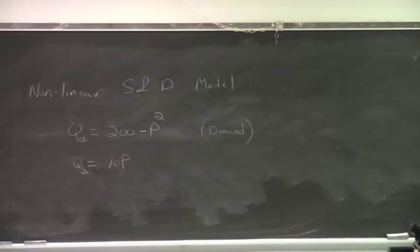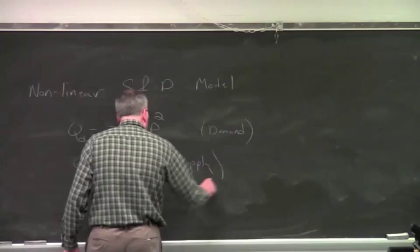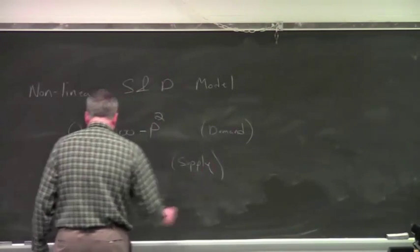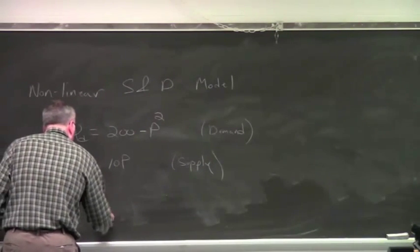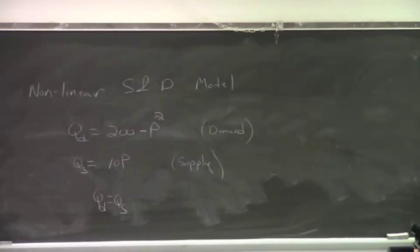So if we looked at this problem, let's first look at this graphically. This is our supply. Of course, we have an equilibrium condition. And equilibrium, Qd equals Qs. So let's look at this graphically first.